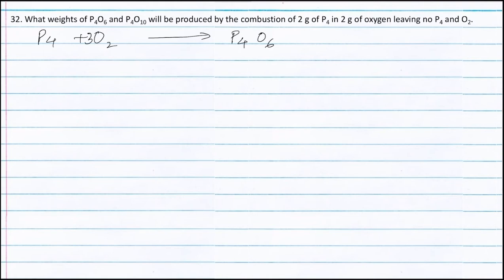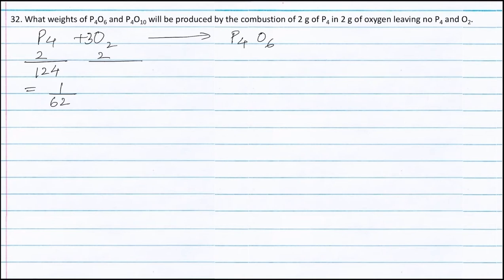Weight of P4 is 2g, therefore moles of P4 is equal to weight of P4 divided by molecular weight of P4, that is 124 grams, and this is equal to 1/62 moles. Moles of oxygen is equal to weight of oxygen, that is 2g, divided by molecular weight of oxygen, that is 32 grams, and this is equal to 1/16 moles.